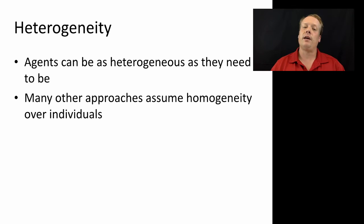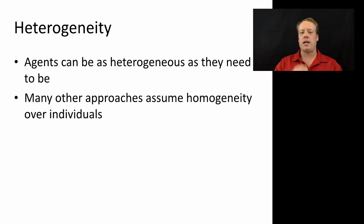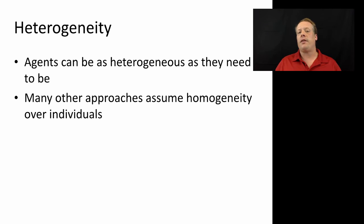Part of the reason why agent-based modeling works well for a medium number of agents is because we can describe all the heterogeneity those agents might have. Agents in an agent-based modeling system can be as heterogeneous as they need to be, and often that heterogeneity is crucial to driving the outcomes. Many other approaches, such as a game-theoretic approach, often need to assume homogeneity over individuals in order to provide a tractable solution. Agent-based modeling doesn't necessarily need a closed-form solution, so a large amount of heterogeneity can be incorporated.